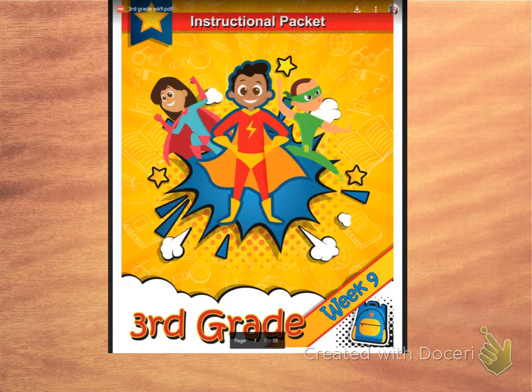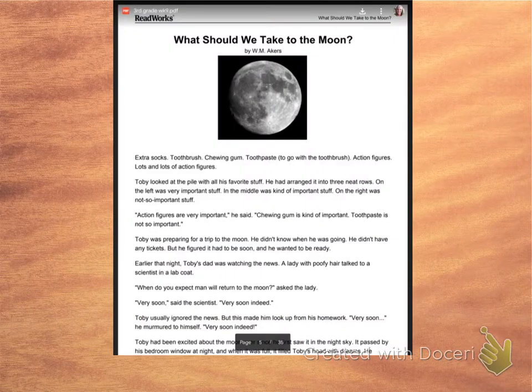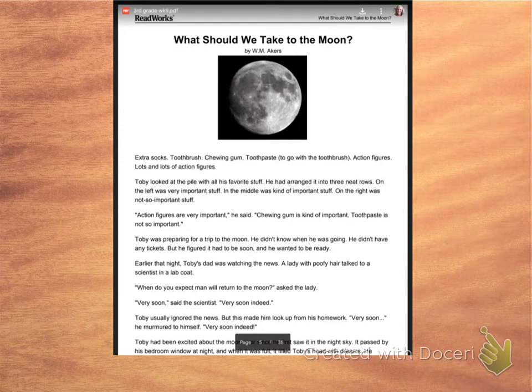Hi kids, this week we're going over the week nine packet. So this week's story is called What Should We Take to the Moon, and it's kind of interesting since they just did the big launch that this would be in our packet this week. This story is about a boy named Toby trying to decide what things he would want to take to the moon, so he has to make some pretty important decisions.